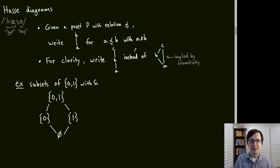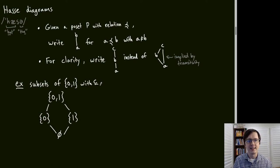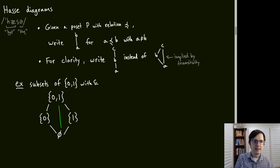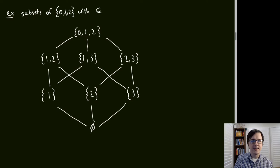Here's a simple Hasse diagram: the set of all subsets of {0, 1} with the subset relation forms a POSET. The empty set is contained in {0} and {1}, and both are subsets of {0, 1}. For the subsets of a three-element set, the Hasse diagram forms a cube structure, and in general n elements give an n-dimensional hypercube.